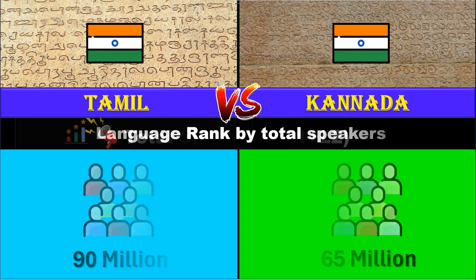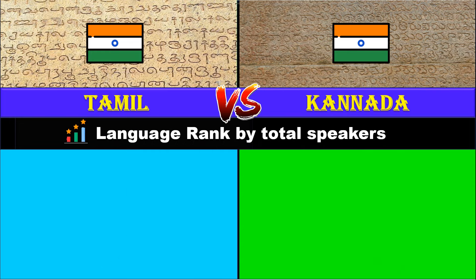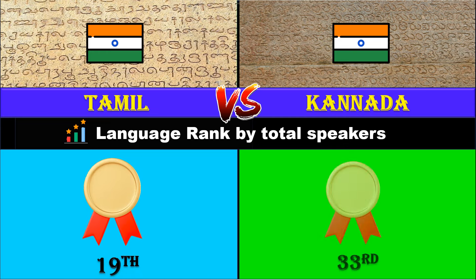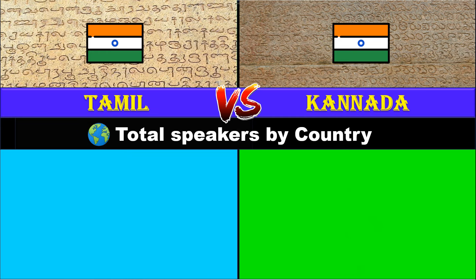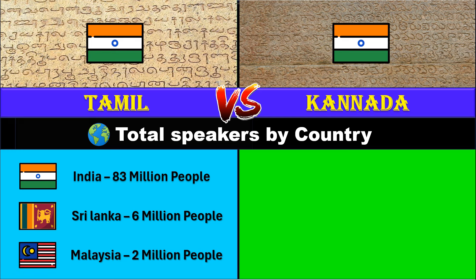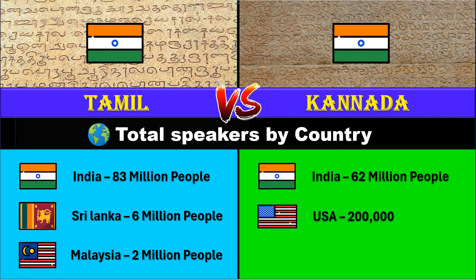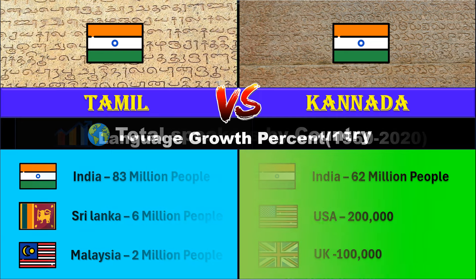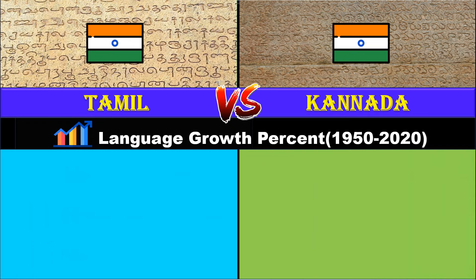Language rank by total speakers: Tamil is 19th, Kannada is 33rd. Total speakers by country: For Tamil it's India with over 83 million, followed by Sri Lanka with 6 million and Malaysia with 2 million. For Kannada it's India with 63 million, followed by USA with over 200,000 and UK with 100,000.